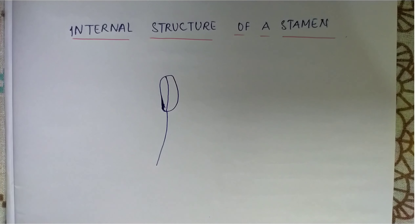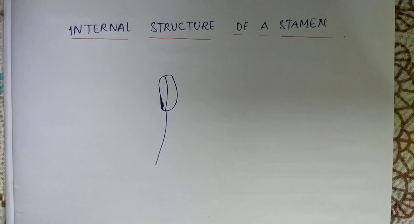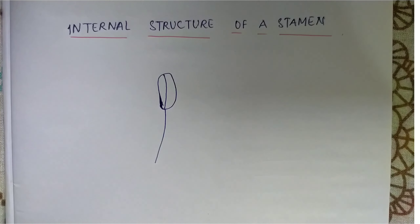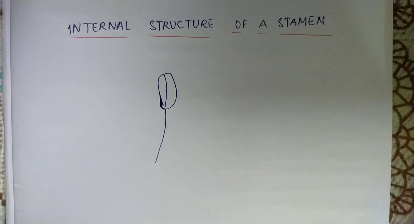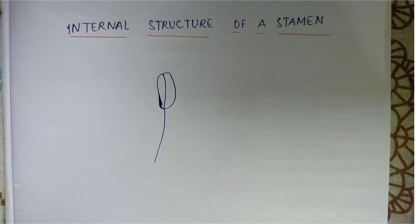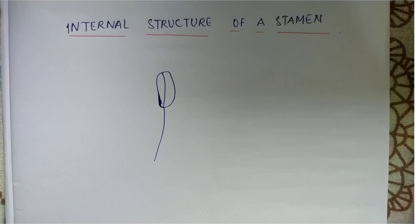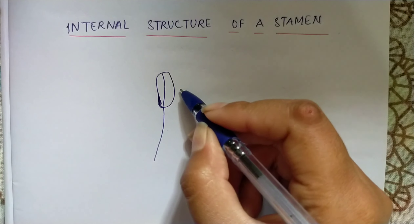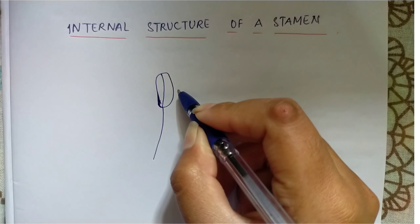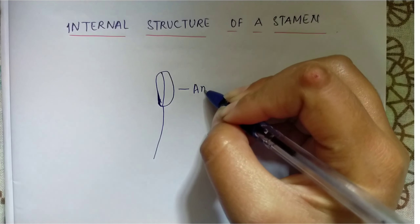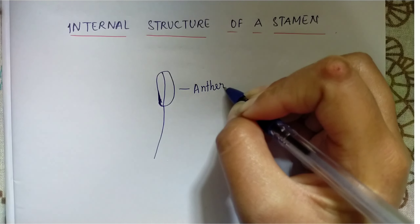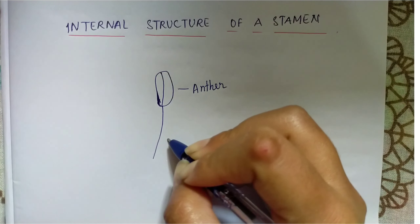In this video, we shall study about the internal structure of a stamen. As we know that stamen is the male reproductive part of a flower which takes part in sexual reproduction. A stamen is composed of anther and a filament.